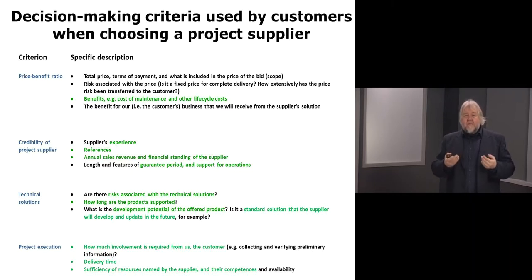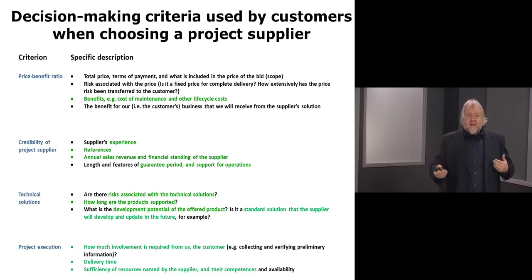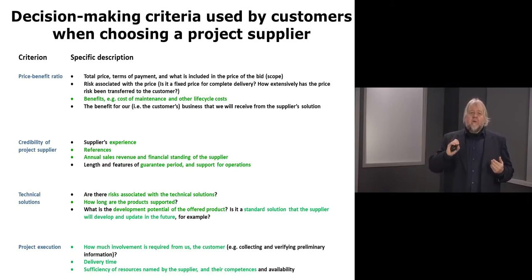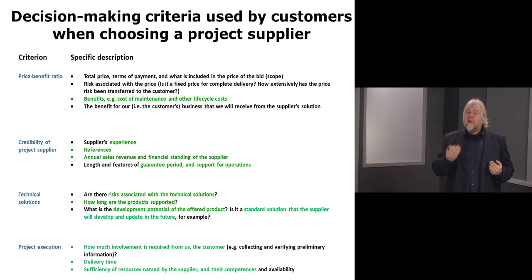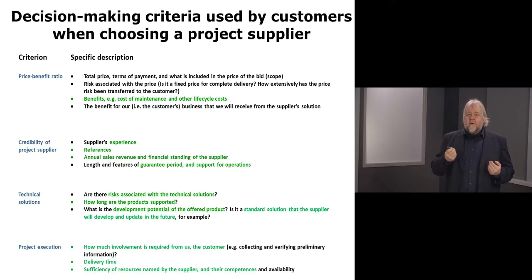The credibility criterion includes the supplier's experience, references, annual sales revenue, and financial standing. We want the supplier to still be in the market several years from now so that we can rely on them for support if needed. We also want the supplier to be a large enough firm so that if people leave due to turnover, they are big enough to hire new people to support our system.